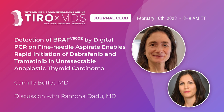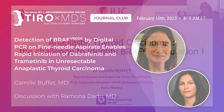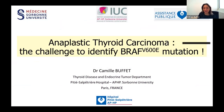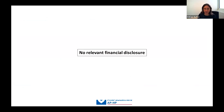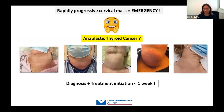Thank you very much for the kind introduction. I really thank you for the invitation to talk about anaplastic thyroid carcinoma and especially the challenge to identify a BRAF V600E mutation. I have no relevant financial disclosure. When a patient is referred to a highly specialized center for a very rapidly expanding cervical mass, the challenge is to establish the diagnosis and be able to initiate treatment within a week from the first patient visit. The main diagnostic hypothesis not to be ignored is anaplastic thyroid cancer.